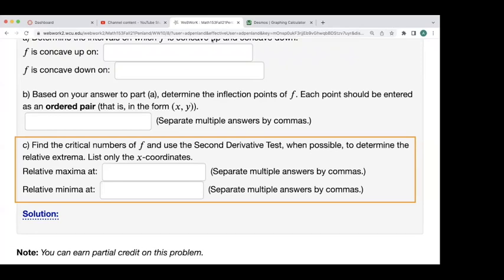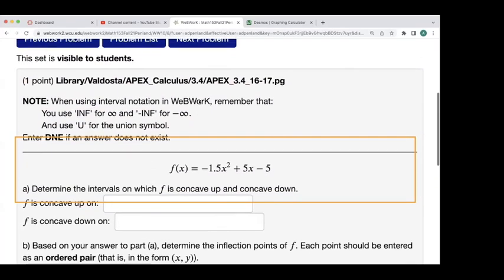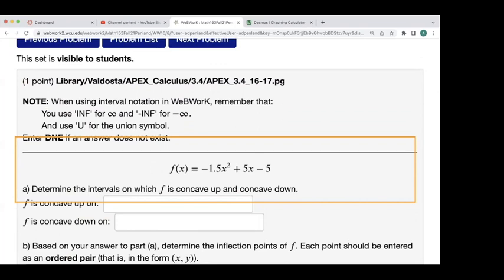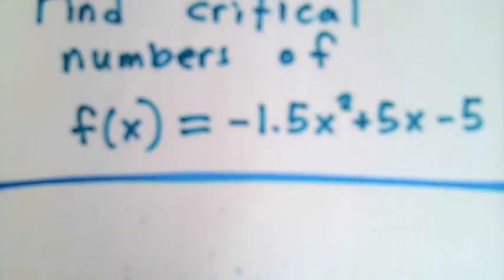Find the critical numbers of f. Here, my f(x) is equal to -1.5x² + 5x - 5.